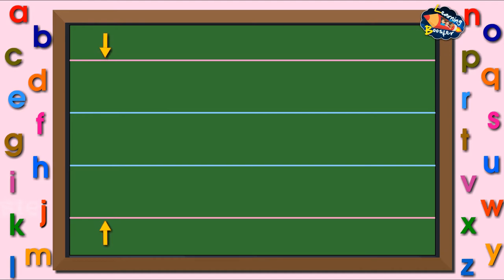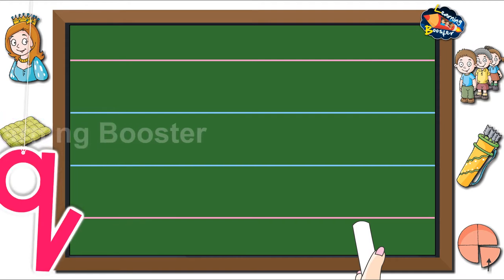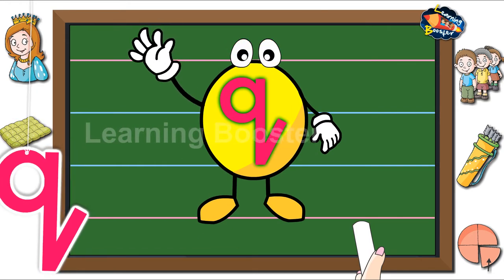Look at the two red and two blue lines. Each has a name. Tall line, waist line, base line and tail line. In this video, we will learn to write small letter Q.